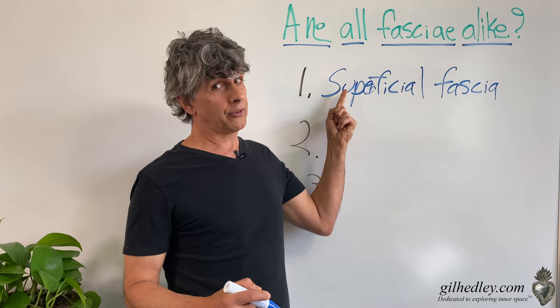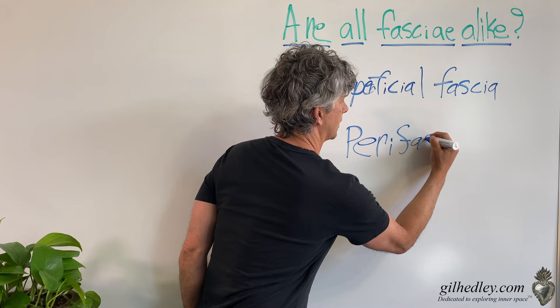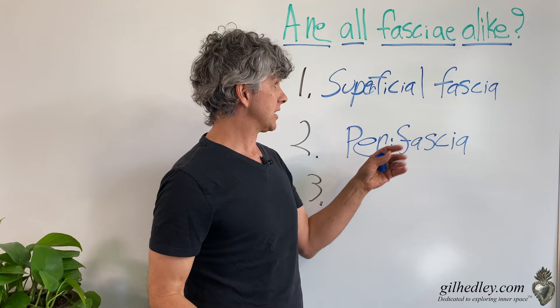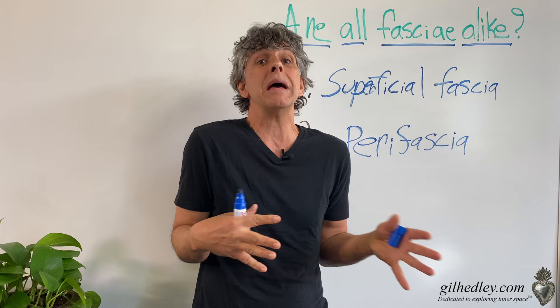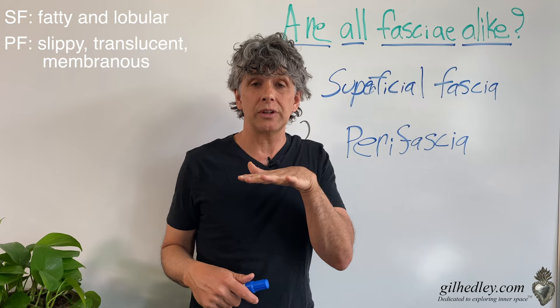What about number two? We have superficial fascia on the surface — what's deeper down? We're going to call it perifascia. Peri means around, so it's a fascia that's around other fascia, or we could say that other fascia are embedded in perifascia. Perifascia, unlike superficial fascia which is fatty and lobular, is more slippery, translucent, and membranous.